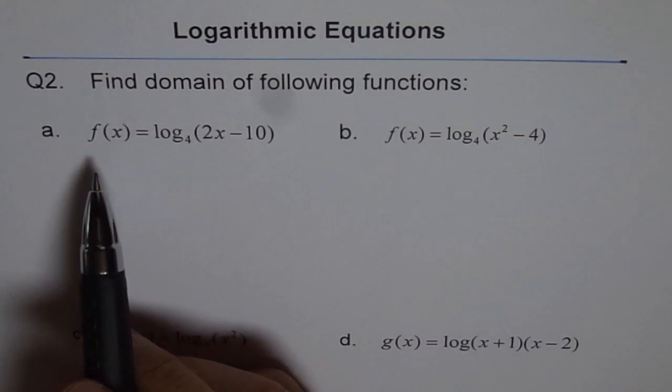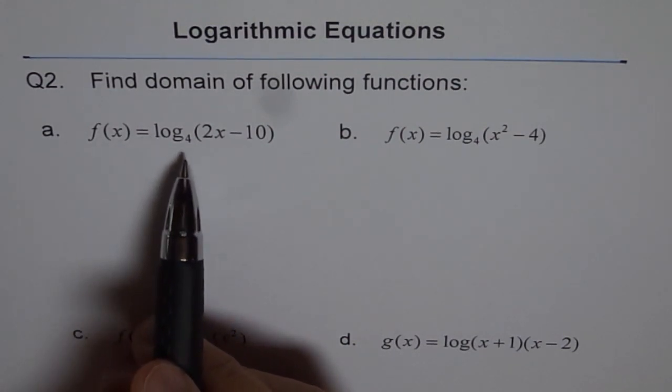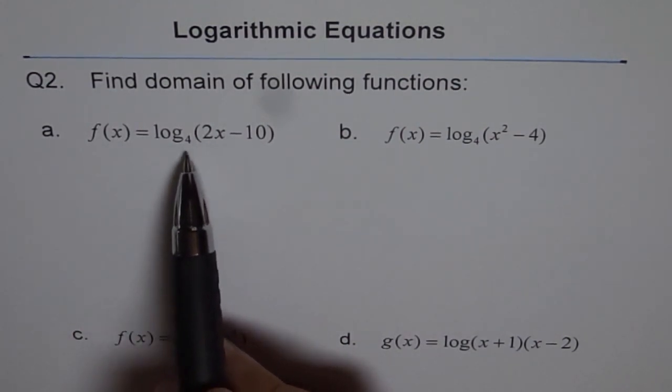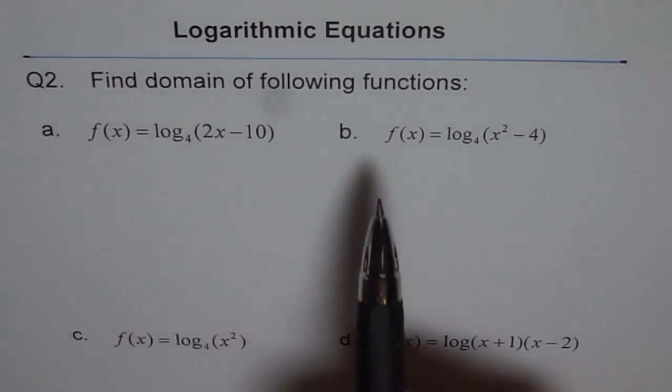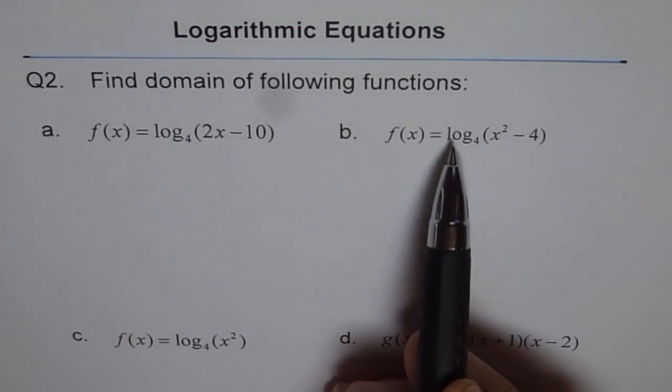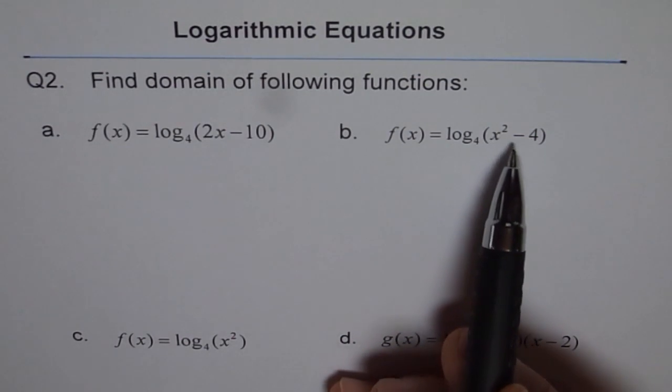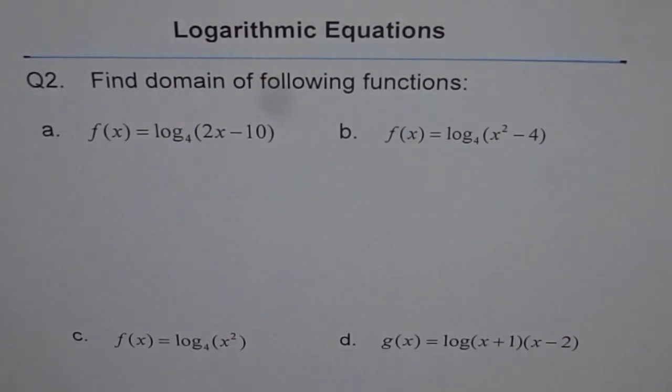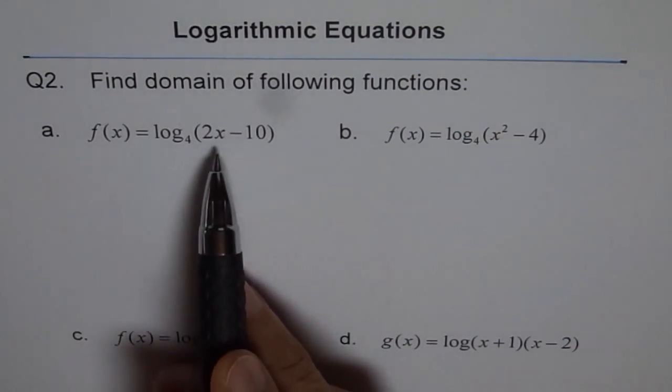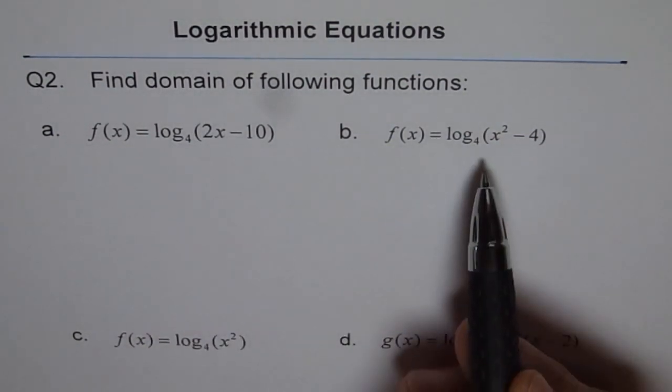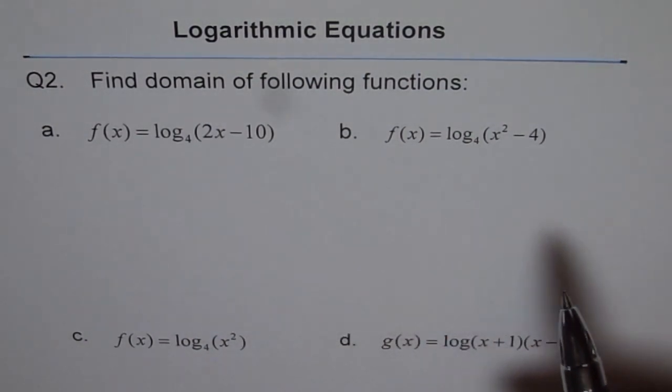One is f(x) = log₄(2x - 10), and b is f(x) = log₄(x² - 4). Now, strategies - what I will do this time is I'll do part a with the help of inequalities and part b with the help of a sketch. I'm giving you different methods so that you can adopt the one which you like.